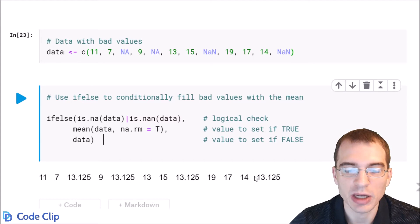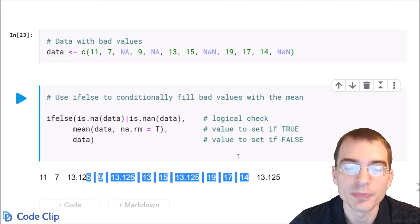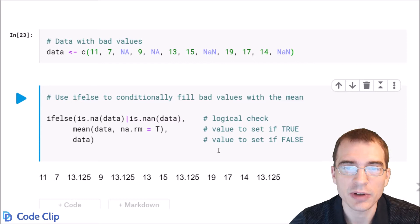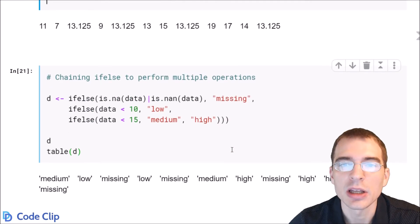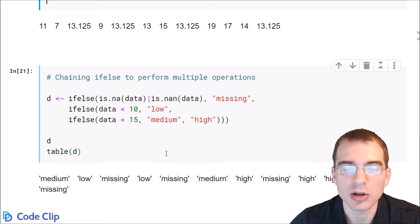And you can actually chain ifelse statements together to do many different checks sequentially if you need to do that. So for instance, if we wanted to make a categorical variable from this data with categories missing, low, high, and medium, we can do that with several ifelse statements.